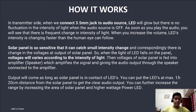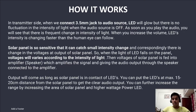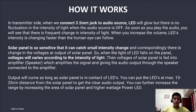How it works. On the transmitter side, when we connect the 3.5mm jack to the audio source, the LED will glow but there is no fluctuation in the intensity of light when the audio source is off. As soon as you play audio, you will see a frequent change in light intensity. When you increase the volume, the LED's intensity changes faster than the human eye can follow.